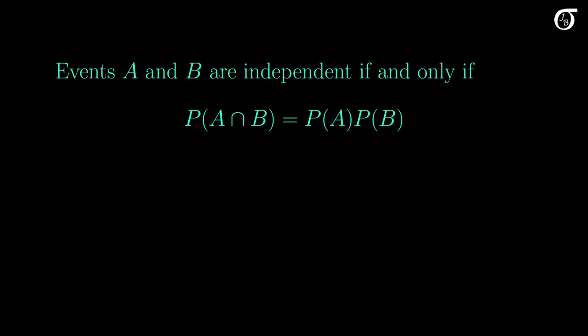You might have seen independence defined in terms of conditional probabilities, which leads to a more intuitive explanation and is a reasonable approach, but mathematically we run into a bit of a snag. Here's the conditional probability formula for event A given event B has occurred. But this is not defined if the probability of B is 0.